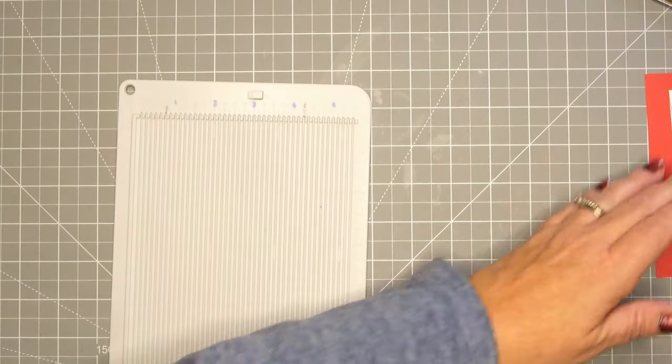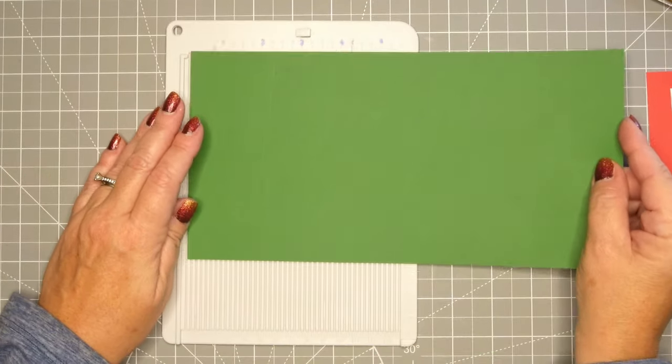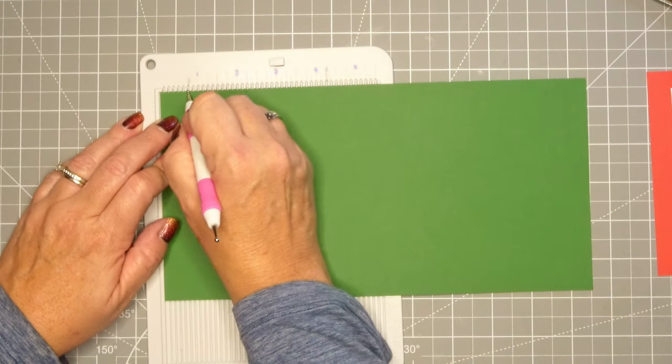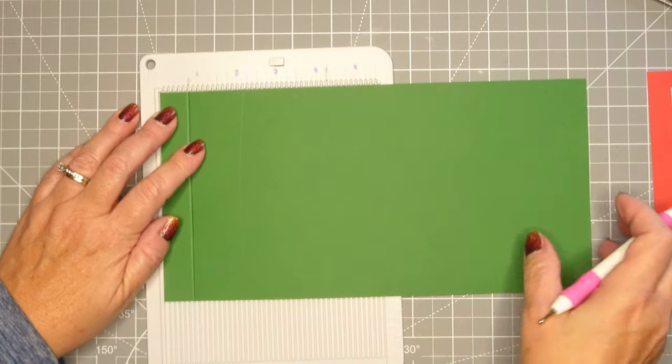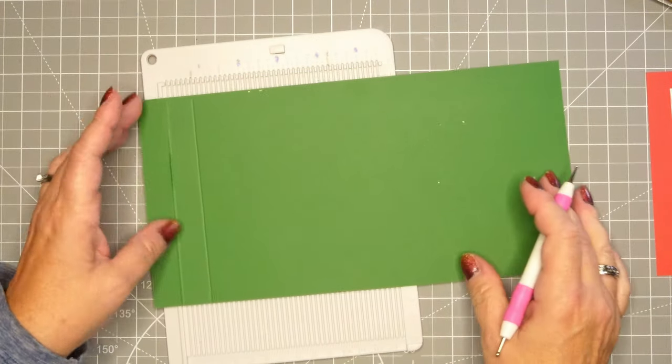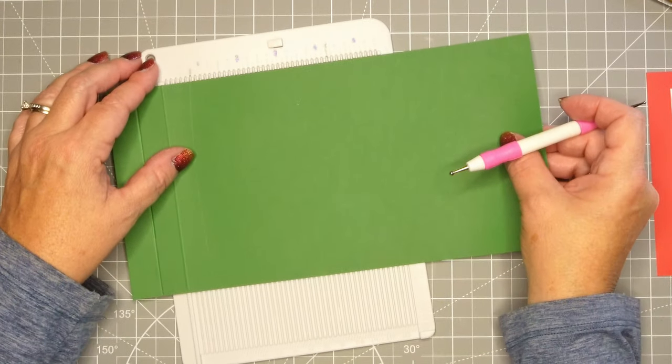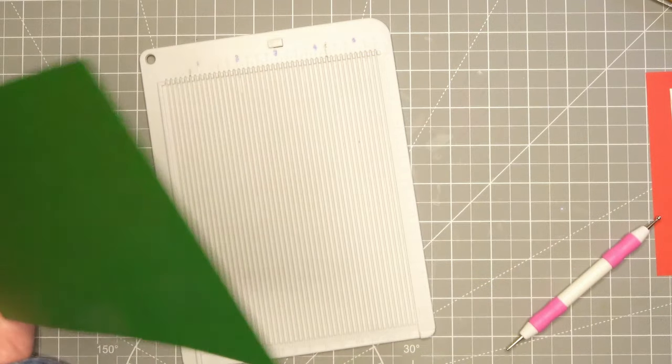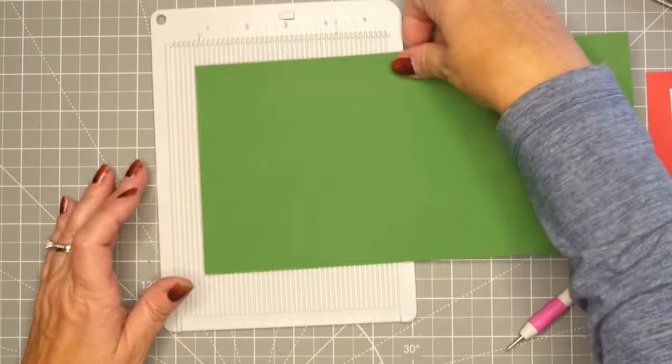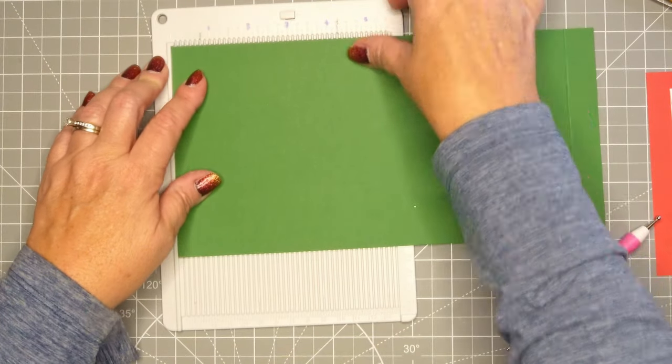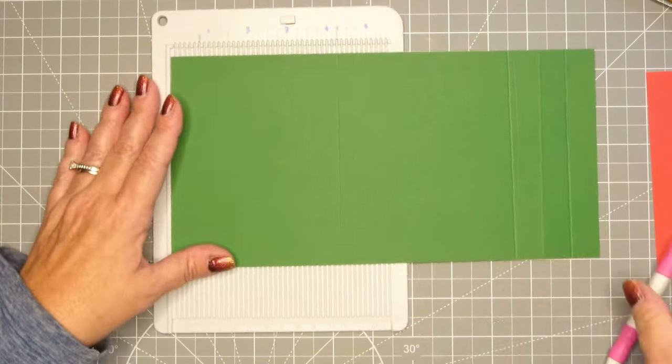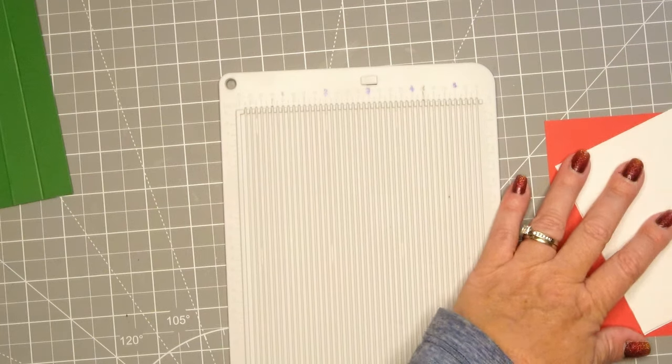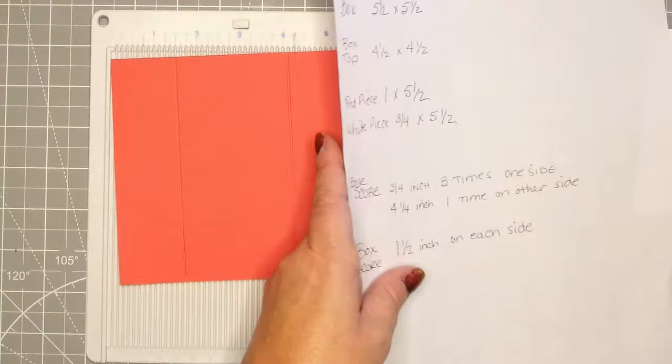Then you're going to take a scoreboard and for the longest piece, you're going to hold it with the length all the way off of your scoreboard and you're going to score that at 0.75 of an inch, and then 0.75 of an inch again. Then I flip it over each time because I'm going to fold it in opposite directions, and then another 0.75 of an inch. So you've got basically three pieces there that are all 0.75 of an inch. You flip it over and you are at 4.25 of an inch on the other side. If you have a longer scoreboard than I do you can do this all at once, but that's what that measurement is.